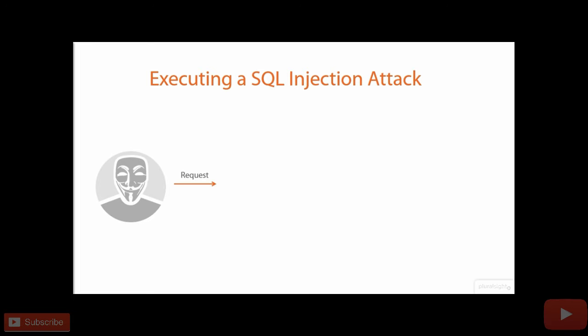So the attacker makes a request — an HTTP request, a very carefully crafted HTTP request — and of course that request goes to a web server. The web server receives the request to the web page and constructs a query out of that request. Think about the typical things that a web application might want to query an underlying database on — this is the query that's being constructed in the injection attack.